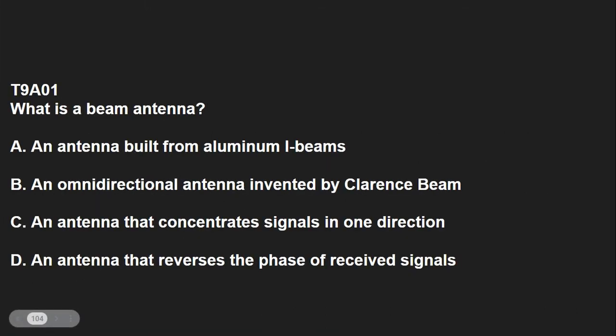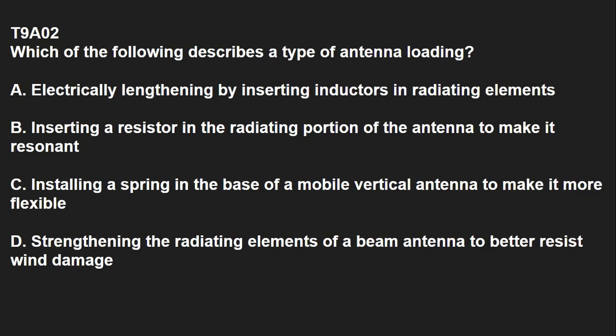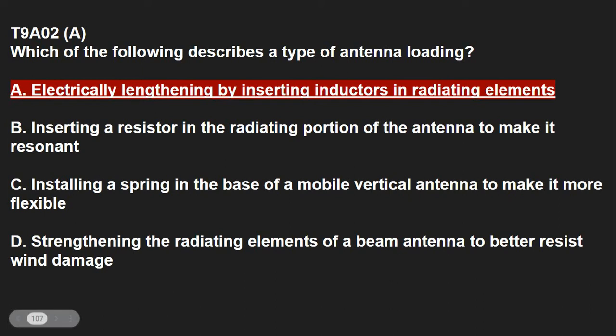T9A01: What is a beam antenna? That answer is an antenna that concentrates signals in one direction. T9A02: Which of the following describes a type of antenna loading? That's A — electrically lengthening by inserting inductors in radiating elements.